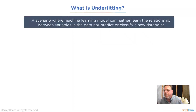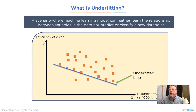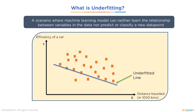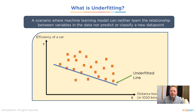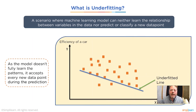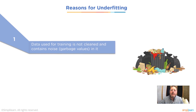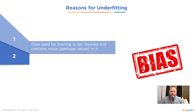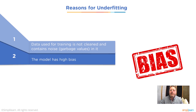So what is underfitting? Underfitting is a scenario where the machine learning model can neither learn the relationship between the data points nor predict or classify a new data point. You can see here we have our efficiency of our car and our line drawn, and it's just going to be way off for both the training and the predicting data. As the model doesn't fully learn the patterns, it accepts every new data point during prediction — so instead of looking for a general pattern, we just accept everything.